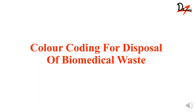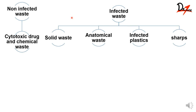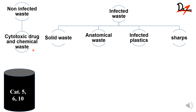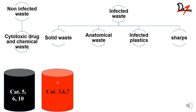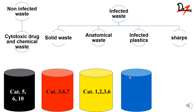Now we move on to color coding for disposal of biomedical waste. Under non-infected waste come cytotoxic drugs and chemical wastes; infected waste includes solid waste, anatomical waste, infected plastics and sharps. Cytotoxic drugs and chemicals go in the black bin — categories 5, 6 and 10. Solid wastes go in the red bin — categories 3, 6 and 7. Anatomical waste goes in the yellow bin — categories 1, 2, 3 and 6. Infected plastics go in the blue bin — category 7. Sharps go in the white bin — category 4. With this we finish the waste chapter.